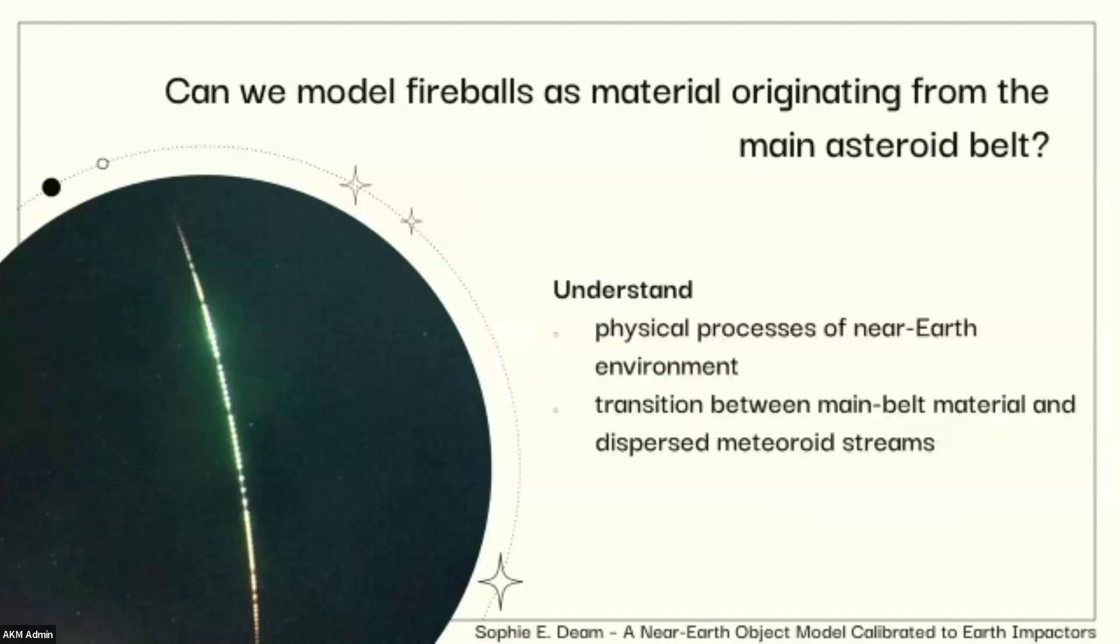And so trying to model material coming from the main asteroid belt can also help inform other aspects, such as maybe physical processes of the near-Earth environment. Do asteroids collide and create lots of small objects when they're in near-Earth space? Do they disrupt when they get close to the sun? Tidal disruption? There's sort of all of these pieces of information out there for large asteroids, but I'm really interested in what's happening for the smaller population. And can we study this transition between main belt material or dispersed meteor streams, sort of the weak and the fragile and the strong material and all that stuff?